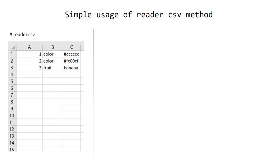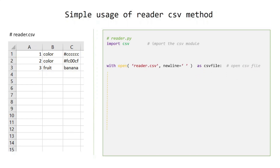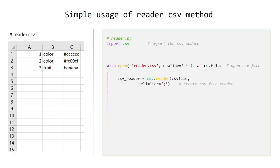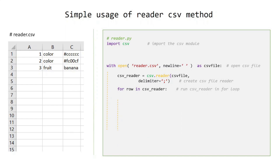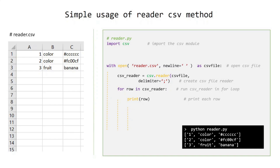Simple usage of csv.reader(): import the CSV module, open the CSV file — remember if the CSV file is a file object it should be opened with newline as empty string — create a CSV file reader, run the CSV reader in a for loop, and print each row. Run it in terminal. As you can see, each row is a sequence.